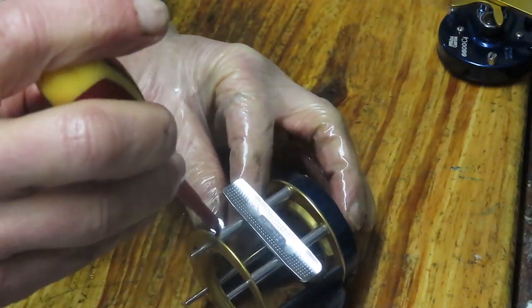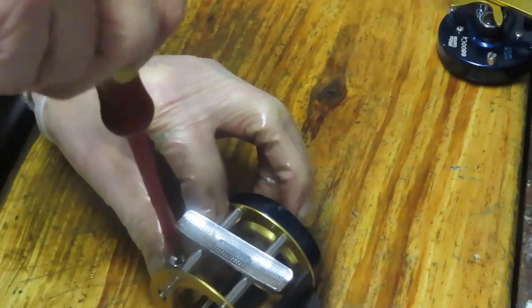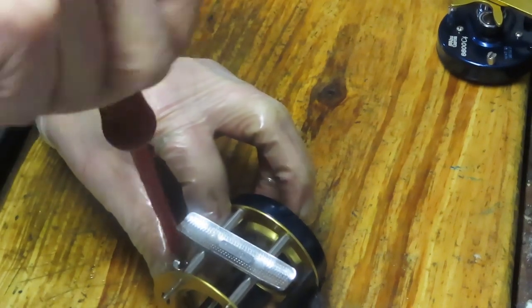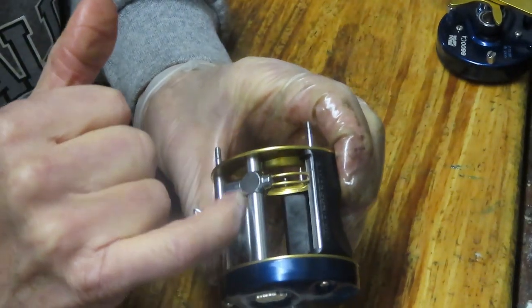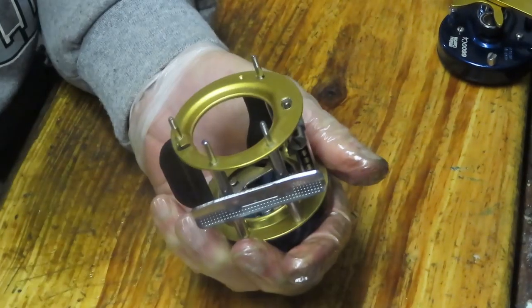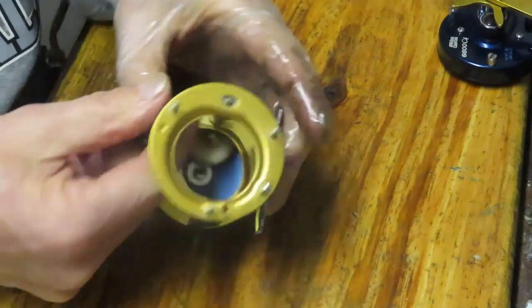Again, just like the other one, it needs to seat properly, so take your time. Eventually you will get it. Okay, once it's tightened up, it'll be right flush with this. There shouldn't be a space. And again, go underneath here, move it and make sure that it's turning nicely, which it is.